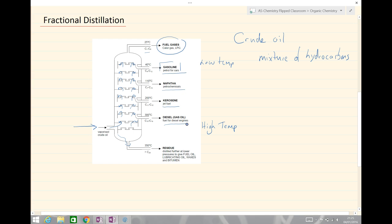So we have low temperature at the top, or low boiling points at the top. We have shorter chain hydrocarbons towards the top and long chain hydrocarbons to the bottom.